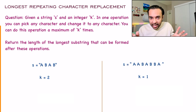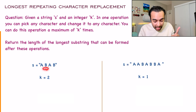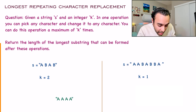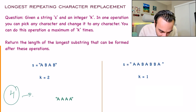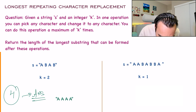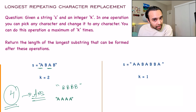For example, consider this test case where the value of k is 2, meaning I can do a maximum of two operations. I want to find the longest substring such that my characters are all repeated. I can pick this B and change it to A — that makes one operation. Then I can pick the second B and change it to A. My string becomes AAAA, and you can see this is the longest substring I can form where all characters are repeating. So for this test case, 4 is the answer.